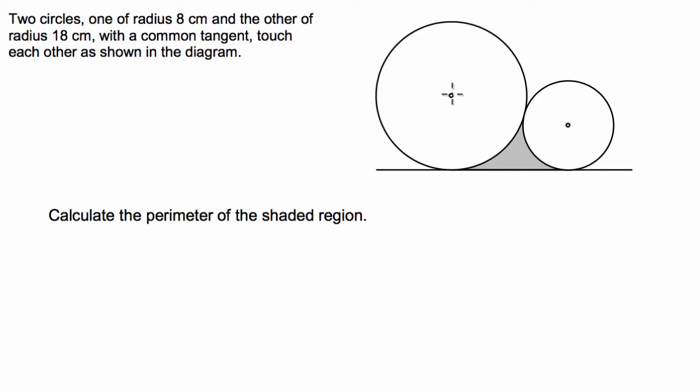To start with, we're going to draw a straight line from the centre of the big circle and the centre of the small circle straight to the ground. We can label this. We know how long this is. This is going to be 18, and this one here is going to be 8. Perfect.